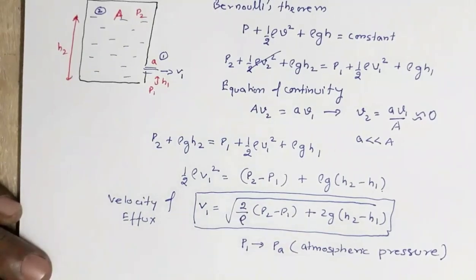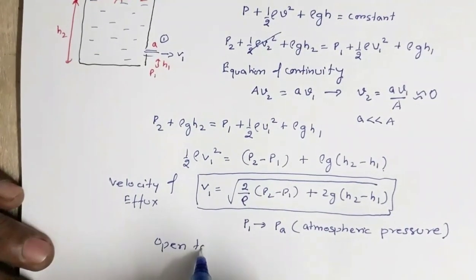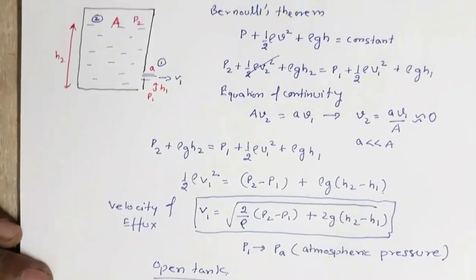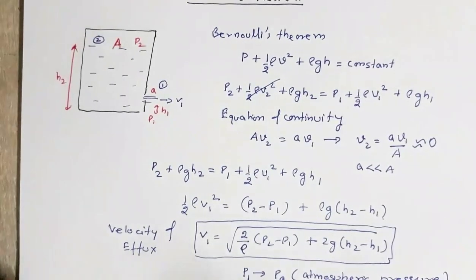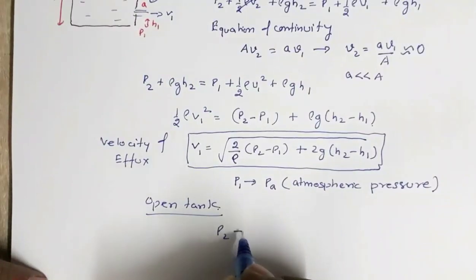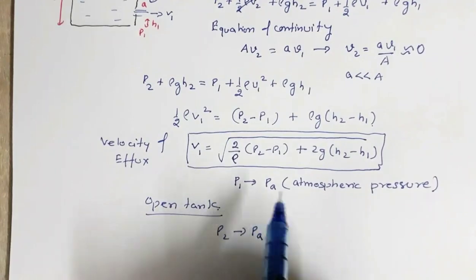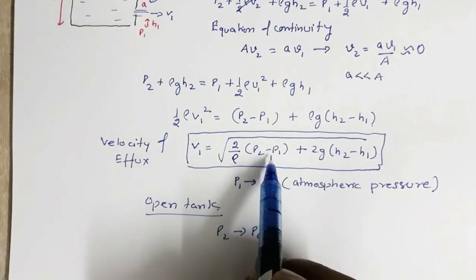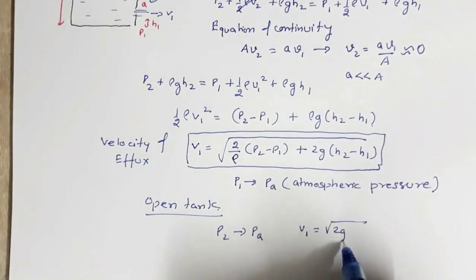In case this is an open tank, the upper surface is also exposed to the atmosphere. In that case, p2 will also equal pA. Since p1 is already pA, p2 minus p1 will be zero. So the velocity of efflux reduces to the square root of 2g(h2 minus h1).